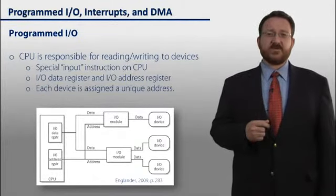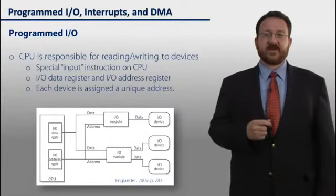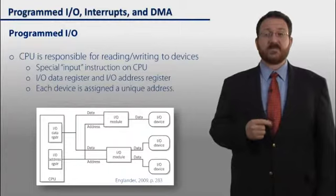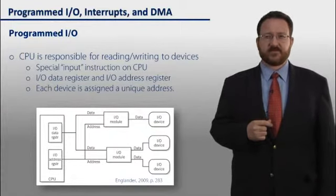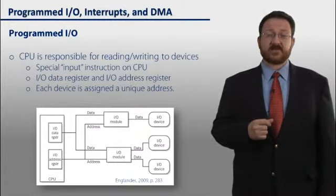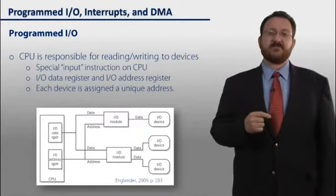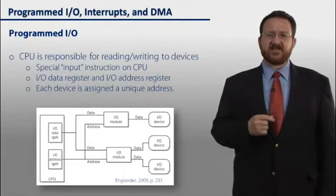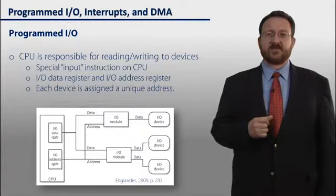In programmed I/O, the CPU is going to be responsible for reading and writing to devices. And we're going to have special input and output instructions on the CPU. This is the way the little man computer handles this situation. We're going to have an I/O data register and an I/O address register that are mirror images of the memory data register and the memory address register.